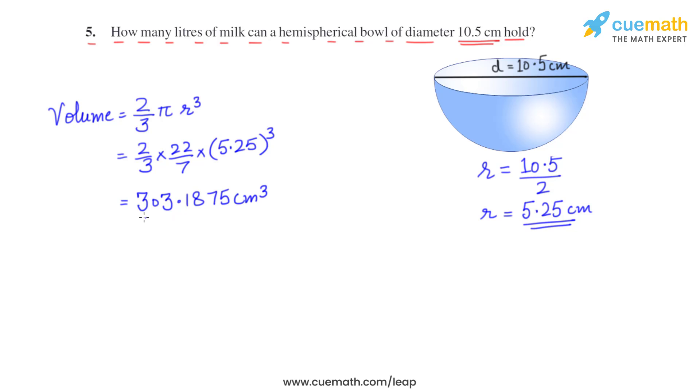This is in cubic centimeters. Now we have to change it into liters. So the relation is 1000 cubic centimeters are equal to 1 liter. It means 1 cubic centimeter will be equal to 1 by 1000 liters. So we multiply this answer by 1 by 1000.